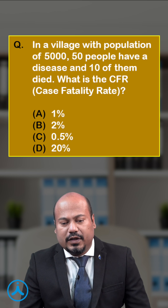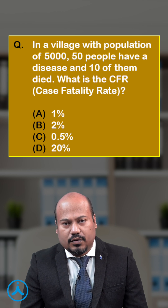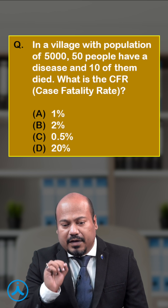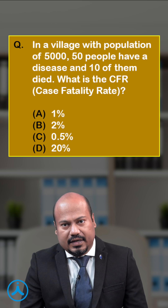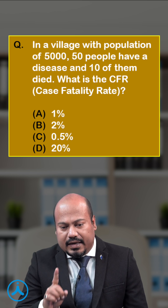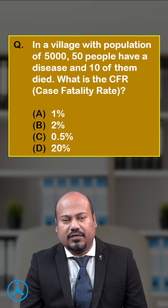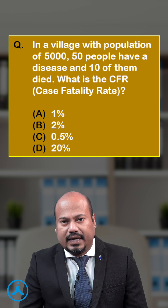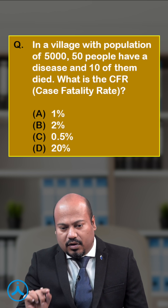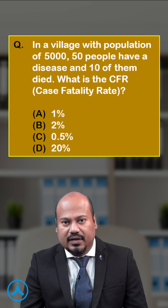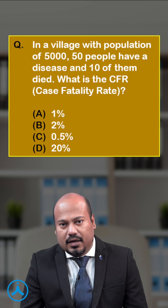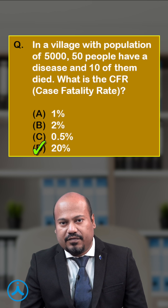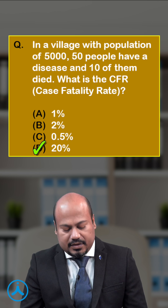Question: In a village with a population of 5000, 50 people have a disease and 10 of them died. What is the CFR? Number of deaths is 10, number of people having the disease is 50. So 10 divided by 50, multiplied by 100 — CFR will be 20 percent.